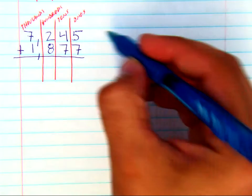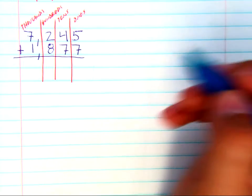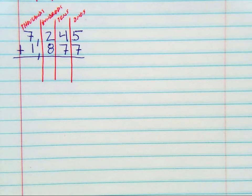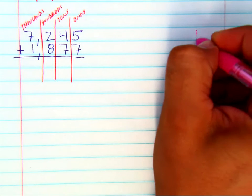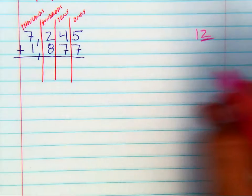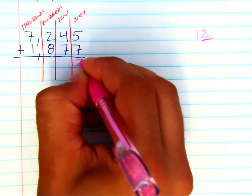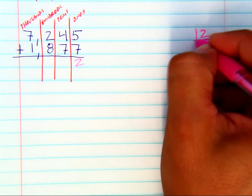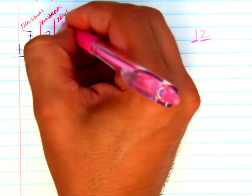So when you add the ones together, 5 and 7 makes 12. So the ones place here, we know that we're going to have two ones left over after we regroup that 10.